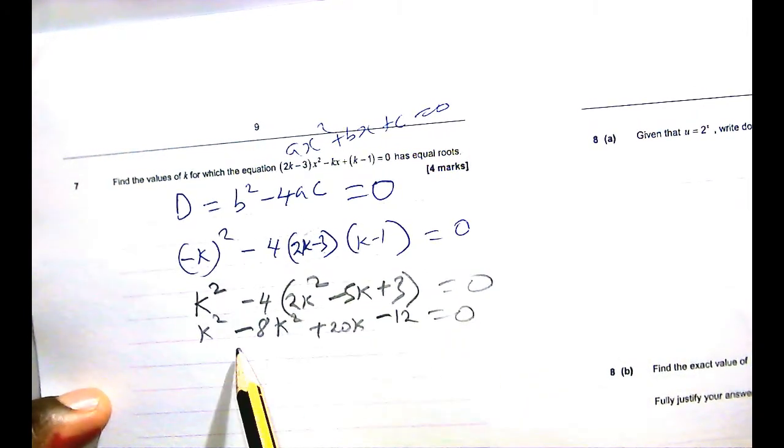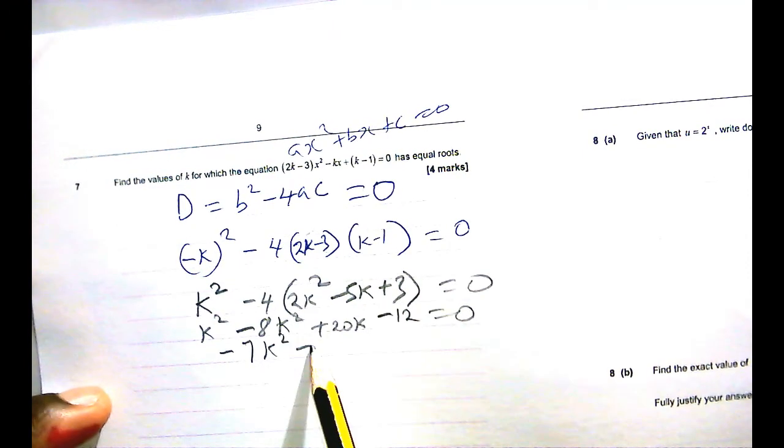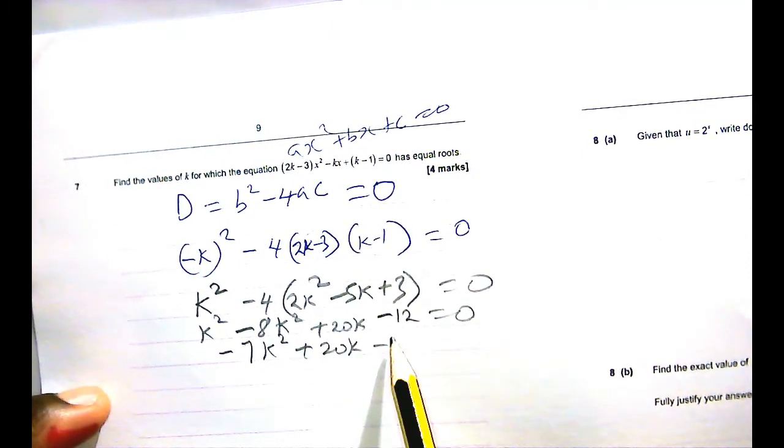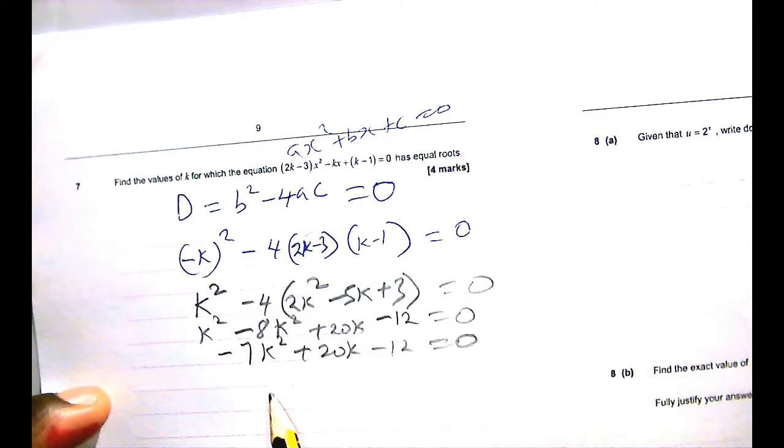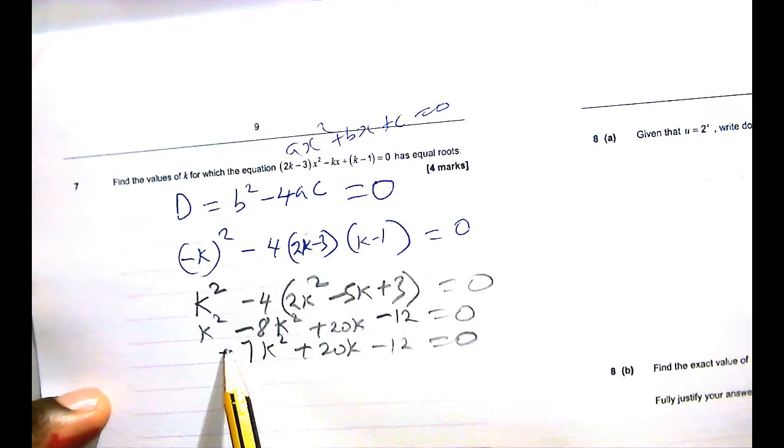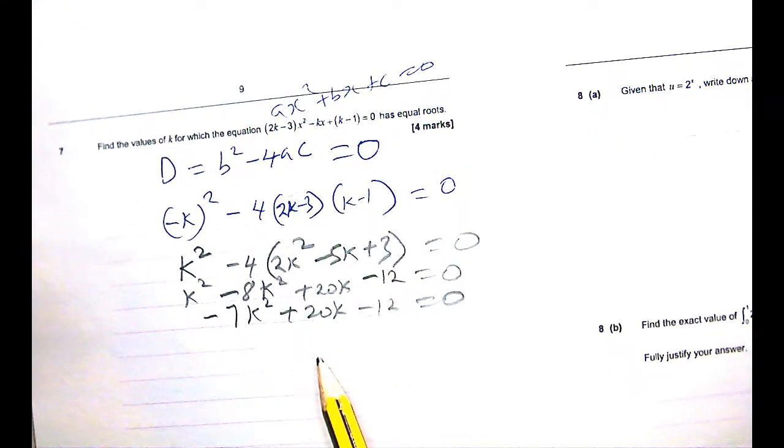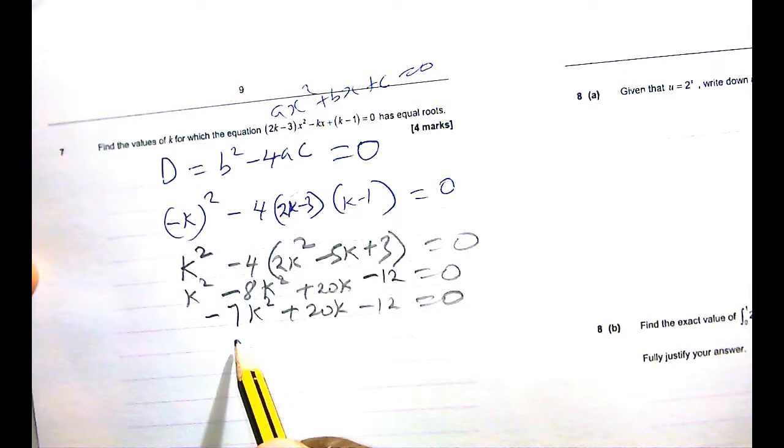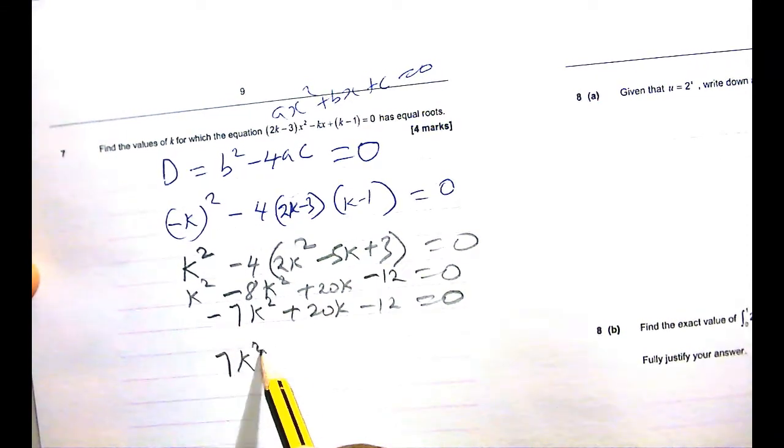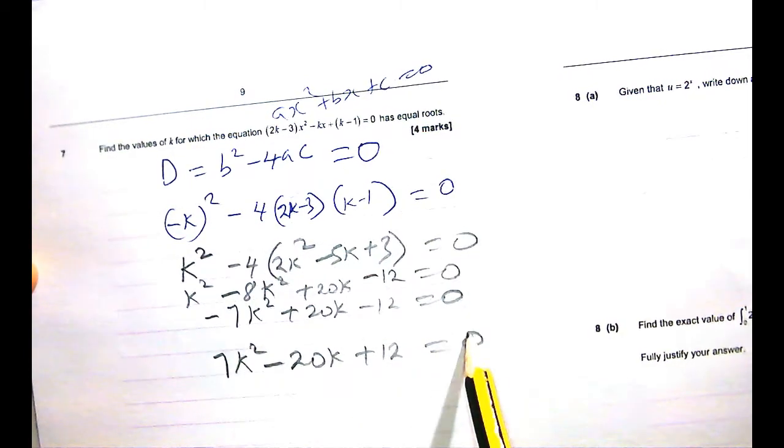If I open up this bracket with minus 4 multiplying everything here, I have k squared minus 8k squared plus 20k. Now, do not ever be in a hurry to the extent of making a mistake with negative times negative. It's very important. And in this case, minus 12 equals 0. So all I have left is my negative 7k squared plus 20k minus 12 equals 0.